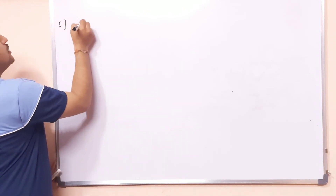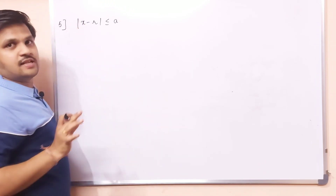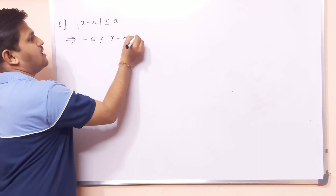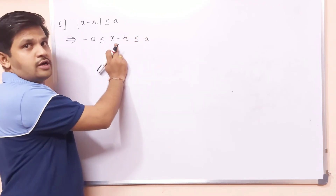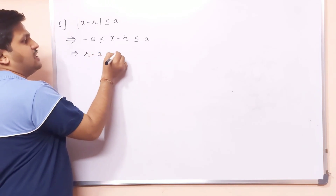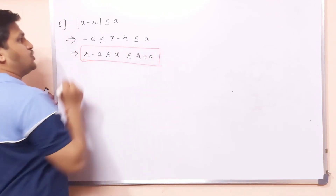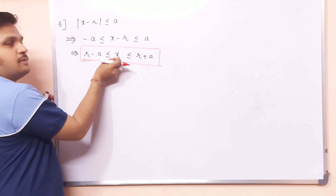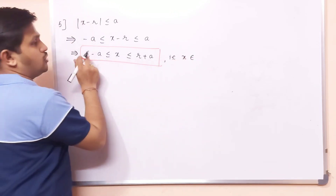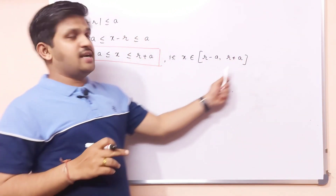Fifth property — standard form for KCET questions: if |x − r| ≤ a, we know that −a ≤ x − r ≤ +a. Adding r on both sides gives r − a ≤ x ≤ r + a. In interval notation, x belongs to [r − a, r + a]. This is a very standard remark — if you remember this, problems can be solved very easily within two seconds.